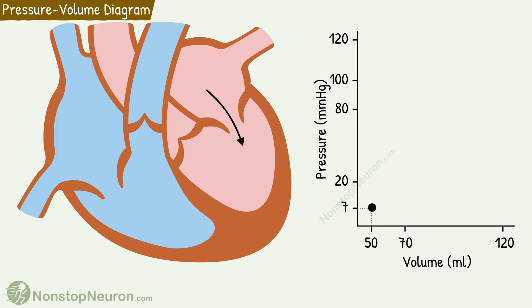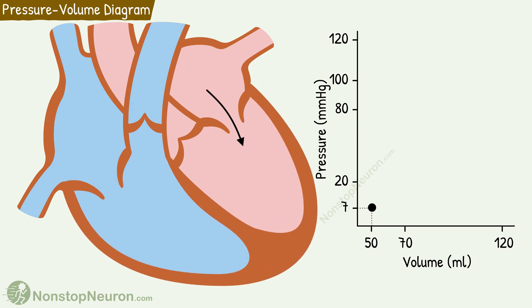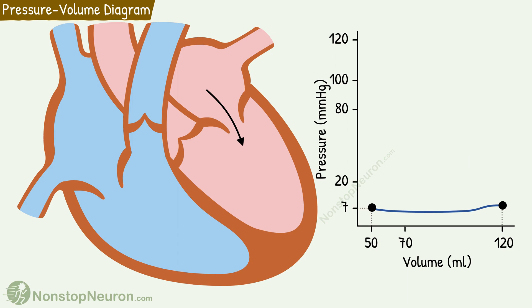Then blood flows from the atria into the ventricles, so volume increases. By the end, the volume reaches maximum — this is called end diastolic volume, which is about 120 ml. Regarding pressure, initially during this filling the pressure falls as ventricles continue to relax, reaching about 5 mmHg. Later, the pressure increases as ventricles receive more and more blood, and in the end the pressure is about 10 mmHg.